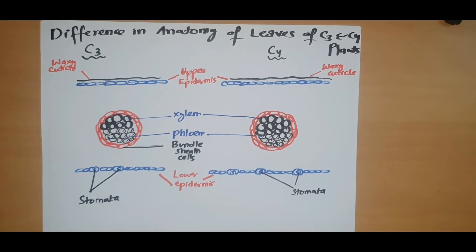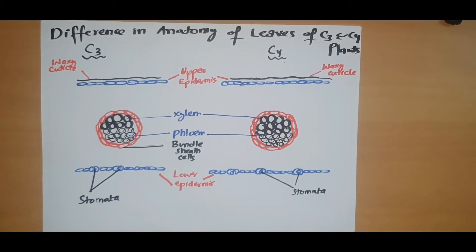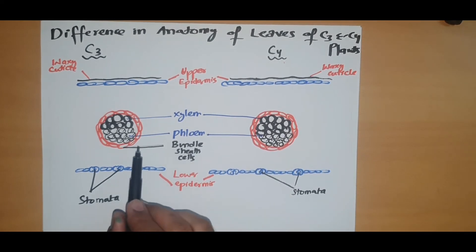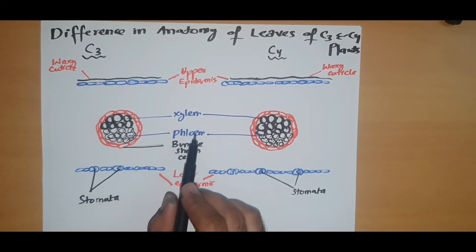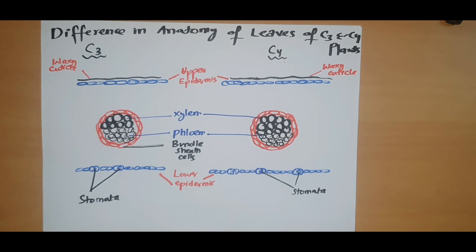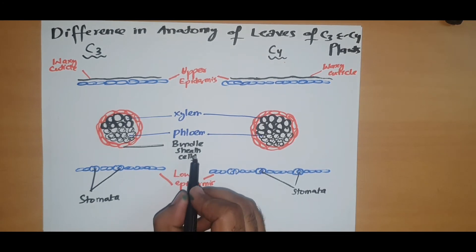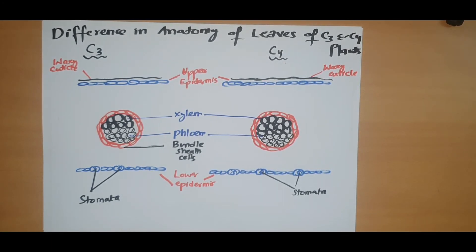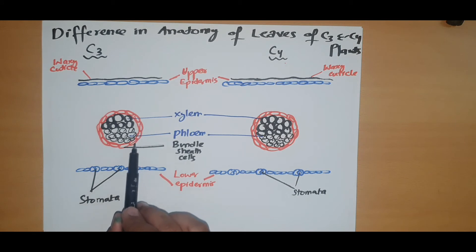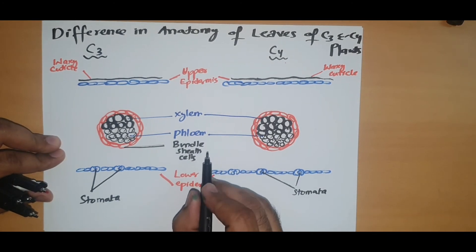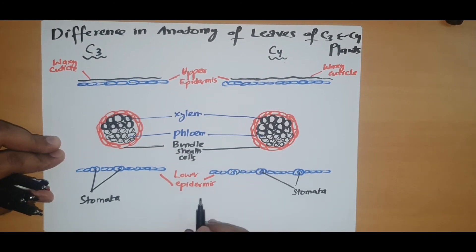The question is why are they called bundle sheath cells? The answer is simple. The word 'bundle' is derived from xylem and phloem which are collectively called the vascular bundle. The word 'sheath' means covering — remember that in biology wherever the word sheath appears it means covering. So these are the cells covering the vascular bundle, and that is why they are called bundle sheath cells.